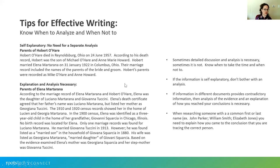Here's an example of something self-explanatory with no separate analysis needed. Hobart O'Hare died in Reynoldsburg, Ohio on the 24th of June 1957. According to his death record, Hobart was the son of Michael O'Hare and Ann Marie Howard. Hobart married Elena Martirana on the 31st of January 1922 in Columbus, Ohio. Their marriage record included the names of the parents of the bride and groom. Hobart's parents were recorded as Mike O'Hare and Ann Howard. Despite Ann Howard not being listed as Ann Marie in both documents, it's pretty obvious these are the same parents, especially given the family Bible page — no separate analysis needed.